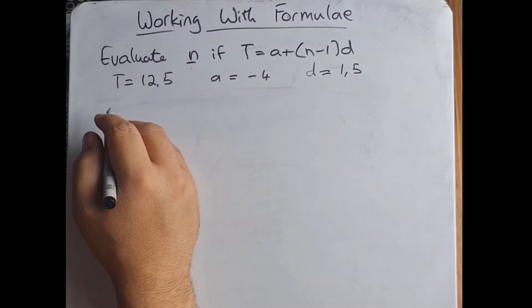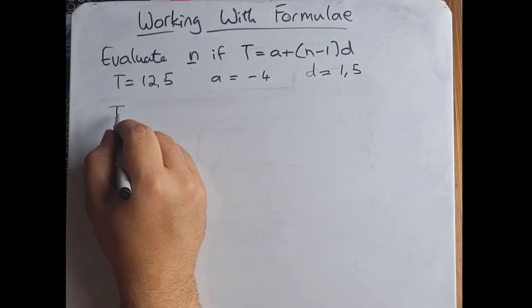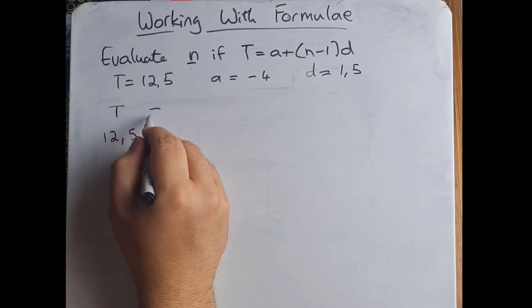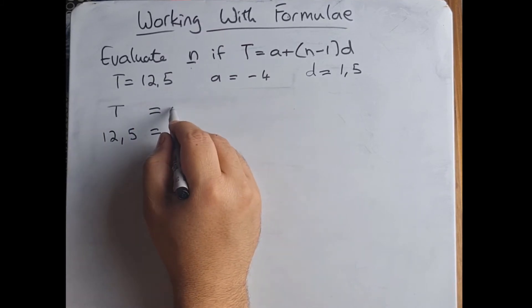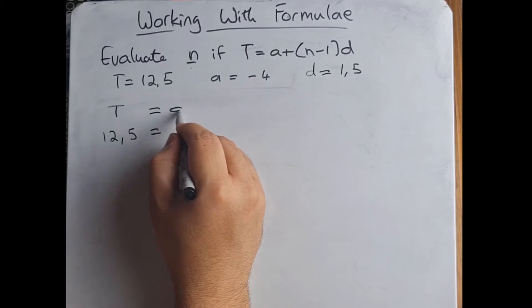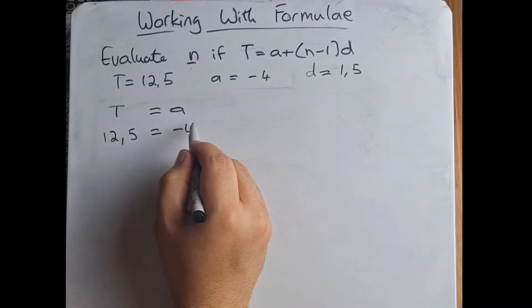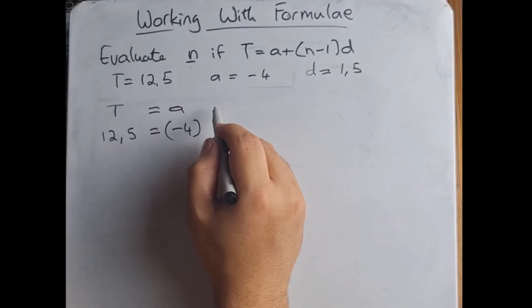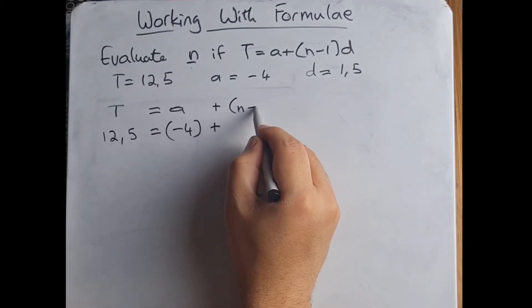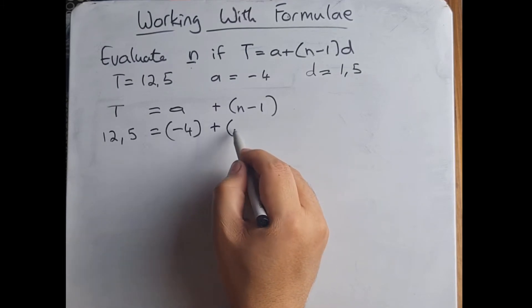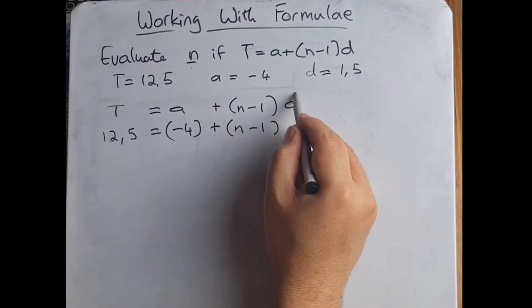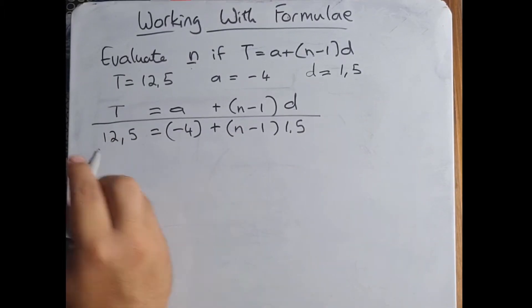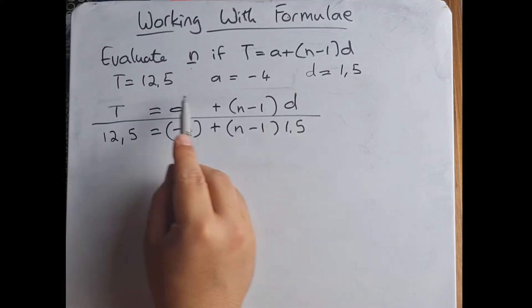So if we now throw that into our formula, we just substitute these things and we say okay, well T that's going to be 12.5 equals a—do we have a? Yes, we have it as -4 and I'm going to put that in brackets so we don't get confused when we need to implement this formula and calculate—plus n-1, we obviously don't have n that's what we're looking for, and d we've got as 1.5.